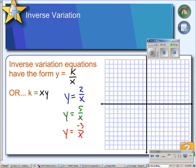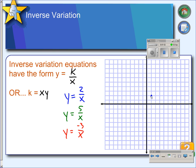So here are three examples of inverse variation equations. And if we were to graph these equations, we would find that they pass through the point...